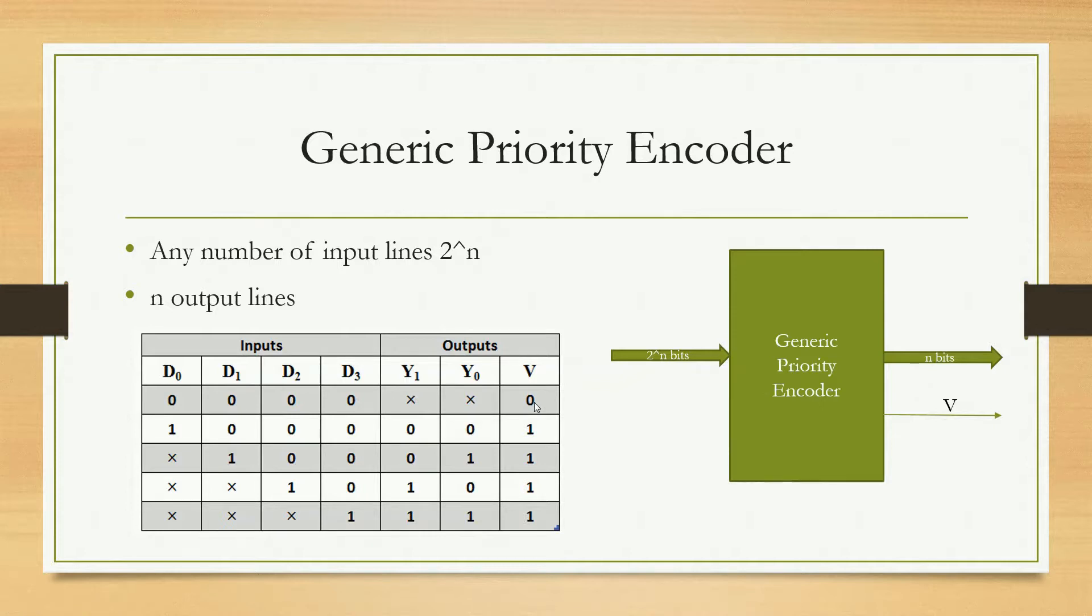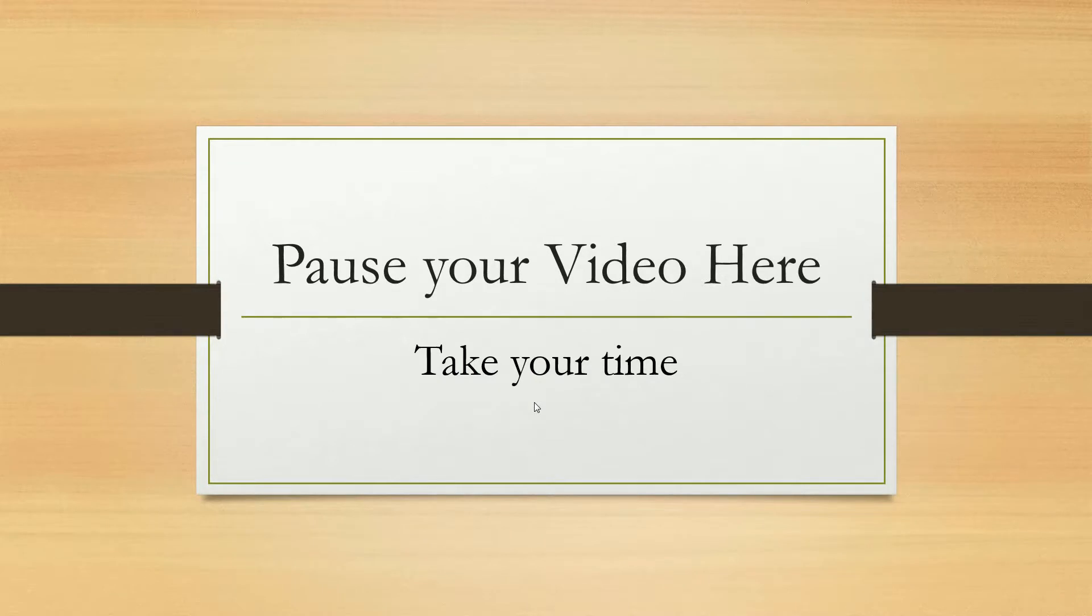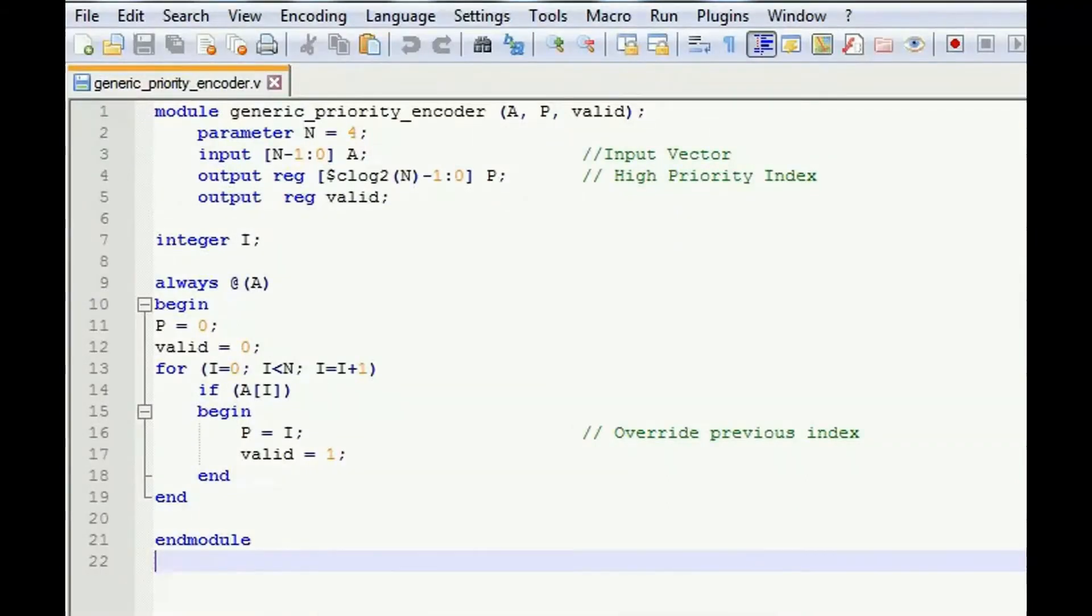Now let us see how to design it. You can pause my video here and you can take your time, you can try to design it. Otherwise I am going to explain you how we design it. I already have written this code and you can get the same code from the description below. This is generic priority encoder module name.